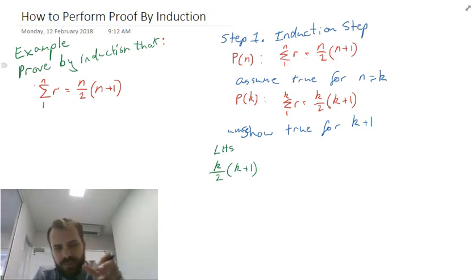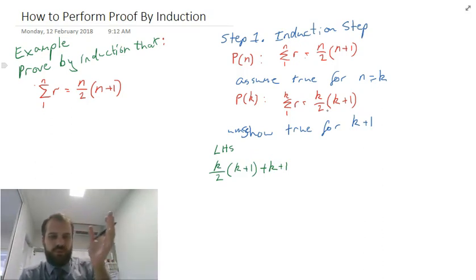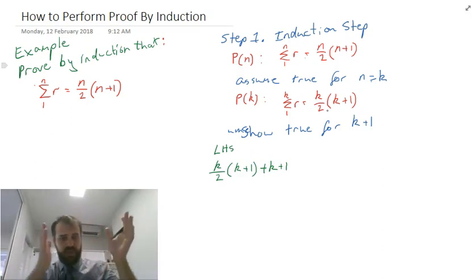Now k over 2 times k plus 1 gives me all of the numbers added up to k. Now if I want to do k plus 1 I need to add on to the end k plus 1. So 1, 2, 3, let's say k was 7, I'm doing 1 plus 2 plus 3 plus 4 plus 5 plus 6 plus 7. I'm doing that in my formula and then I'm saying if I know 7 I can just add k and that's why I'm adding k plus 1.